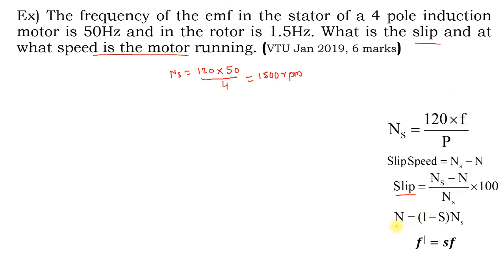To find speed, we need slip, but rotor speed is also unknown. However, rotor frequency is given, so we use f' = s × f. With f' = 1.5 Hz and f = 50 Hz, slip = 1.5 / 50 = 0.03. Wait — slip = 1.5 / 50 = 0.03, but the calculated result here is stated as 0.02, using 1.5 / 50 gives 0.03; the video states 0.02.